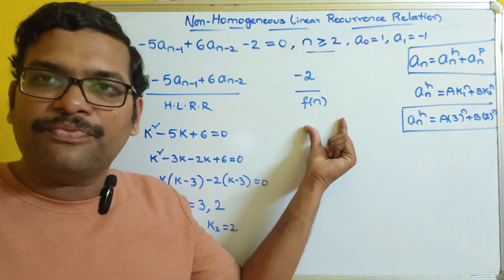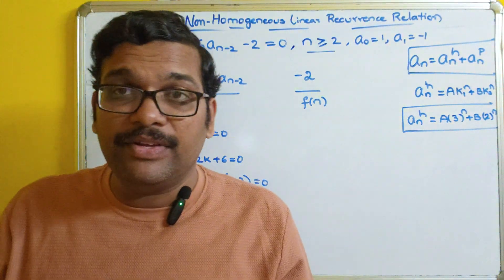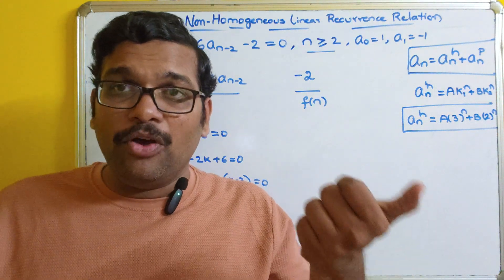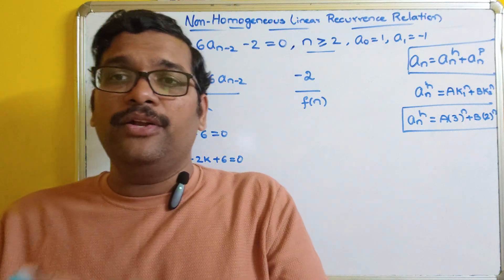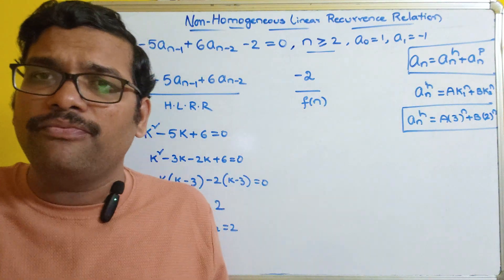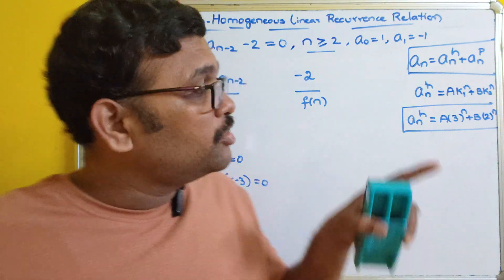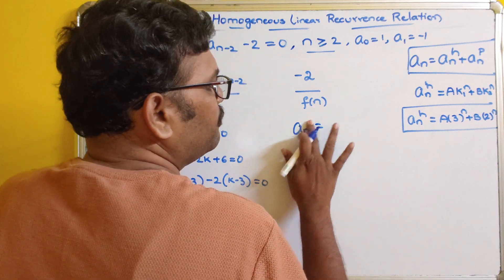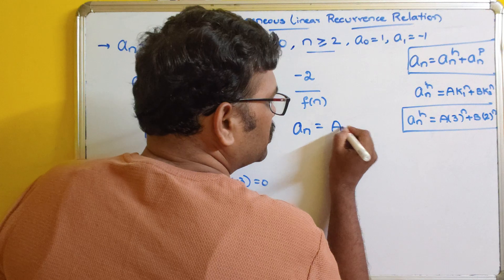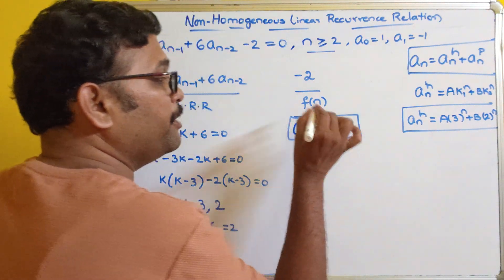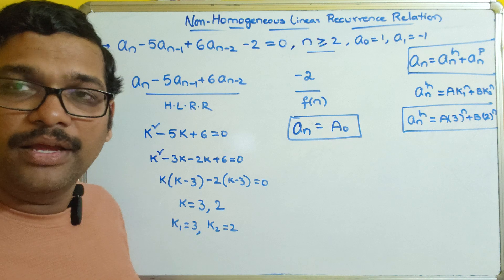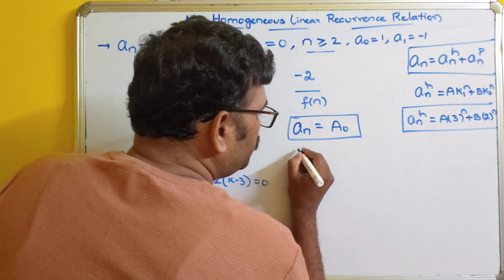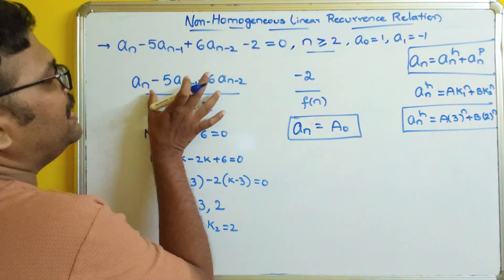Now what is the particular solution for this function? We have seen a table in our previous session. If the function is a constant, the particular solution a_n_p will be a constant a_0. If it is a multiple of n, then the solution form is different. Since here the function is a constant, the general form for a_n_p is a_0.